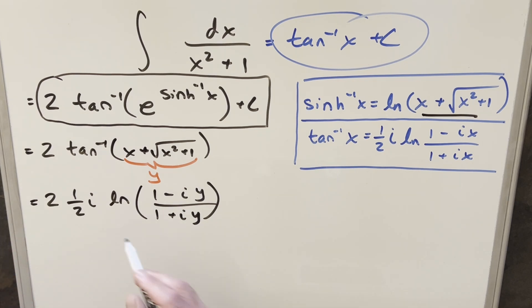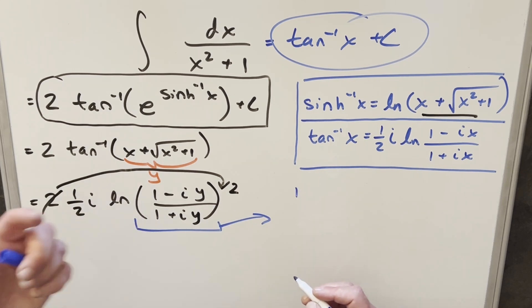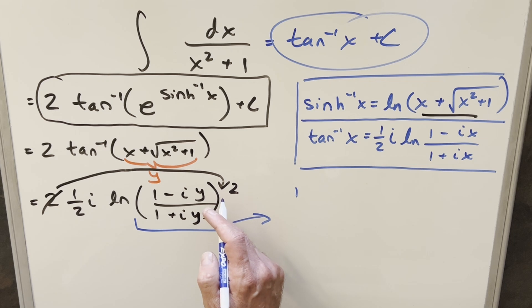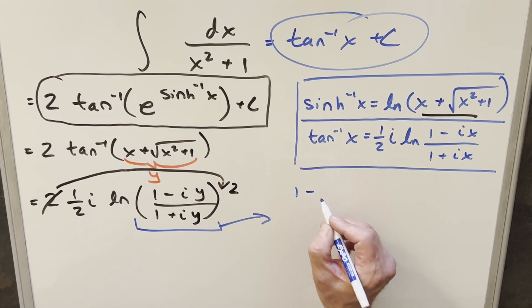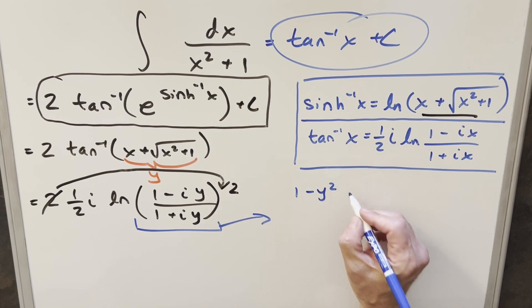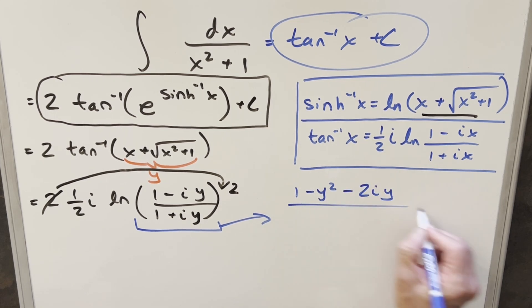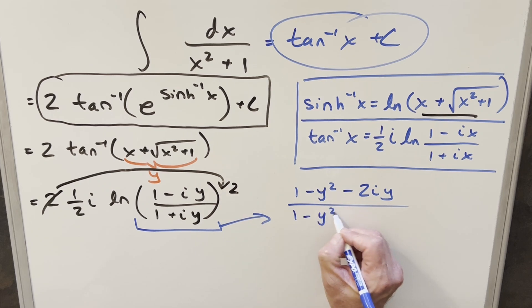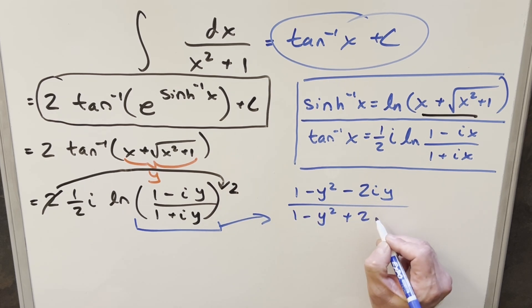Because what I want to do instead is I want to take this 2 and bring it into the exponent on the log just using log properties. And that way, we can square this out. So we'll have this 2 here like that. Because really, I'm going to need to simplify this part. So let's see what happens when we square this out. If we just multiply this out, we're going to get 1 squared is just 1. Squaring the last part minus i y, that's going to become minus y squared. And then multiplying out the middle terms, this is going to become minus 2 i y. And then the same kind of thing in the denominator. This is still going to be 1 minus y squared. And then when we do the middle terms, we're going to get a plus 2 i y. Then notice here we have this. I want to simplify this fraction.